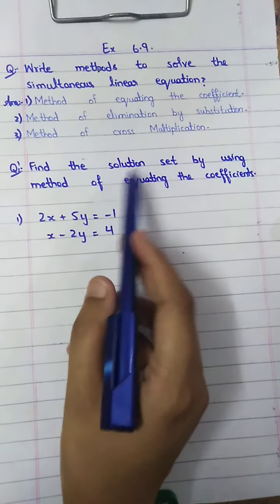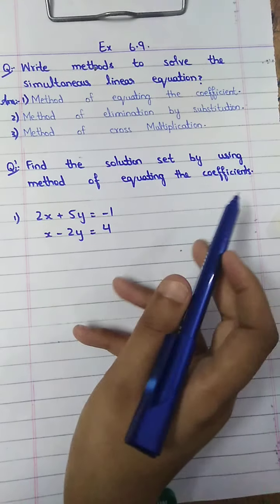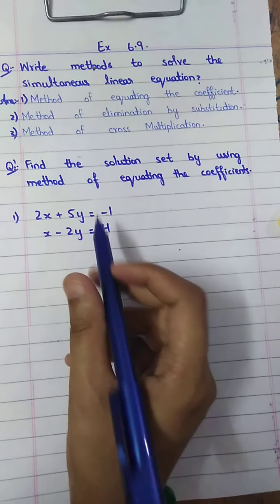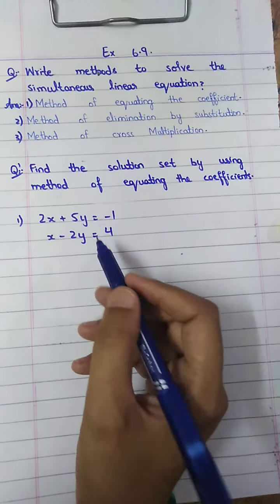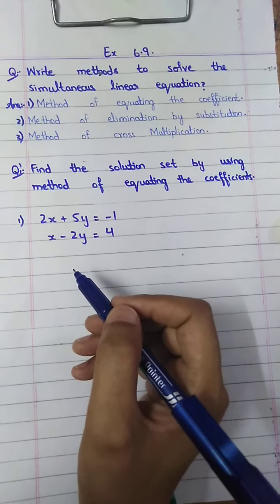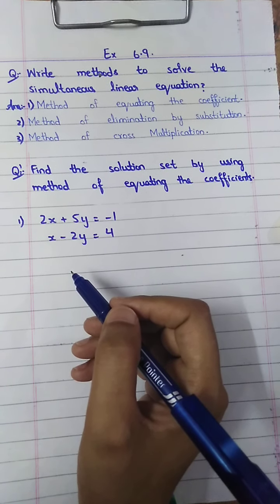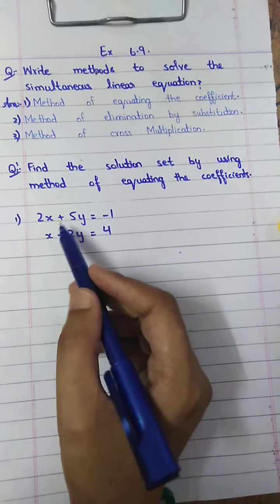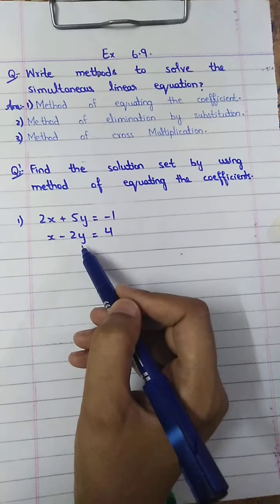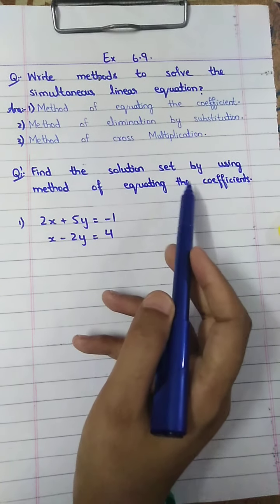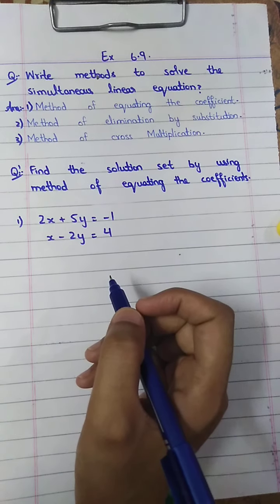The first question is: find a solution set by using the method of equating the coefficient. Two equations are given. You have to find the solution set — that is, the value of x and the value of y — by using the equating the coefficient method.